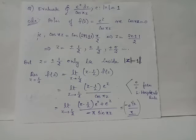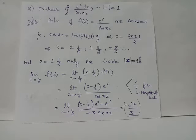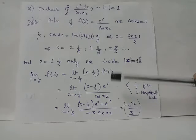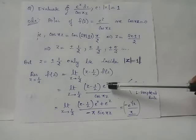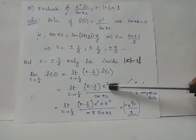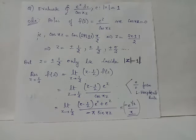These two poles at ±1/2 are simple poles. The residue of f(z) at z = 1/2 is obtained as the limit as z tends to 1/2 of (z − 1/2) · f(z), where f(z) = e^z / cos(πz). On direct application of limits, this is of the indeterminate form 0/0, so we apply L'Hôpital's rule. The derivative of the numerator using the product rule is (z − 1/2)e^z + e^z.